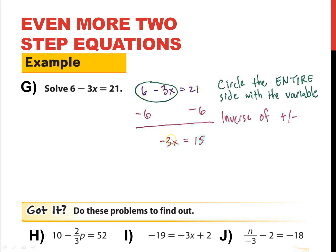So that leaves us with the next step of our equation, which is negative 3x equals 15. I have multiplication and the inverse of multiplication is division. So I divide both sides by negative 3. 15 divided by negative 3 is x equals negative 5. All right.